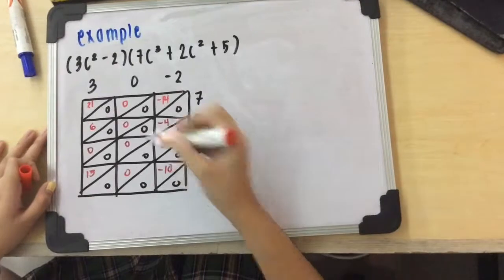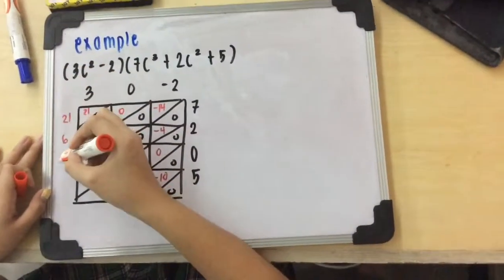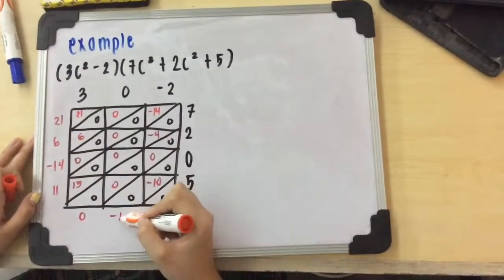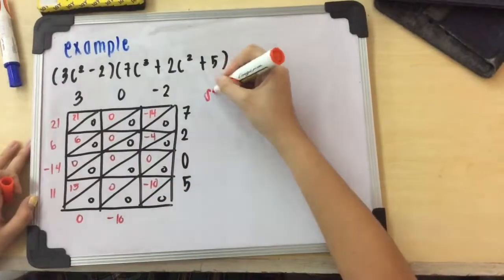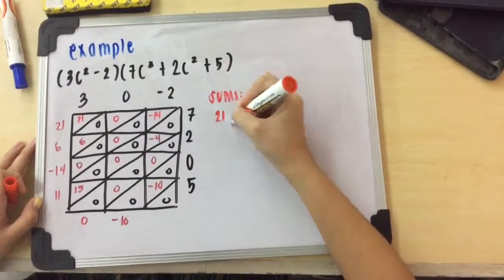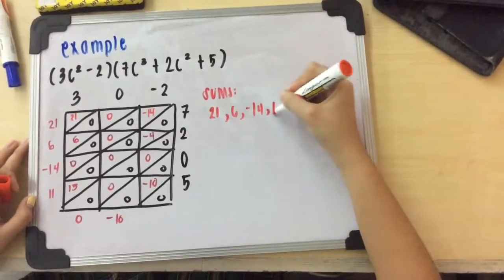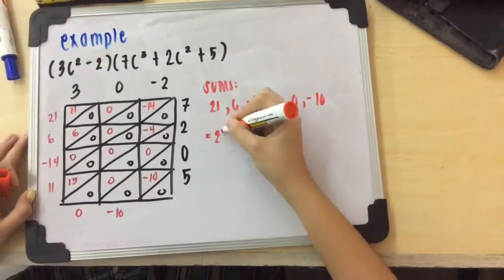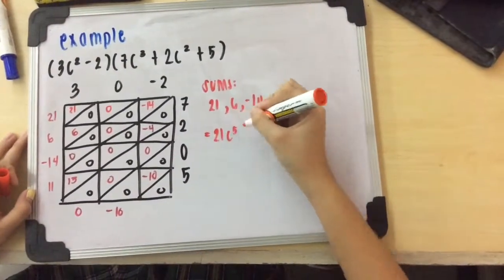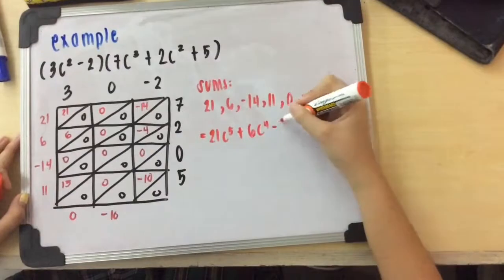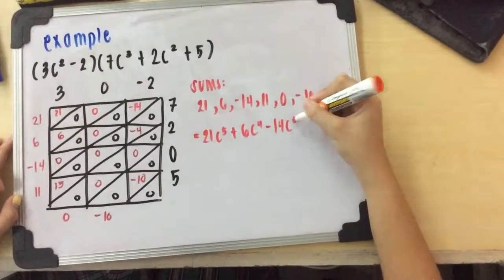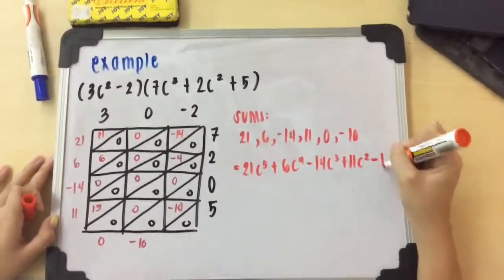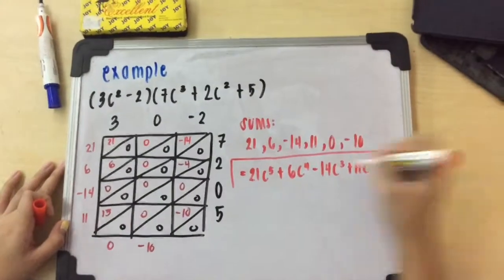After that, you can clearly see the diagonal lines, and you can apply addition or subtraction. Then you list down the sums. To know what degree you're going to start in, add the degree of the first term on the left side to the first term on the right side.